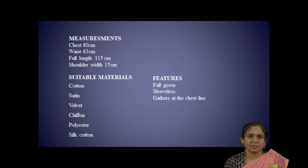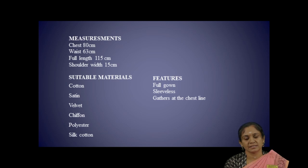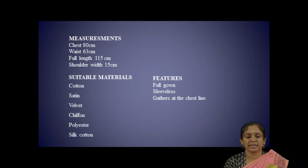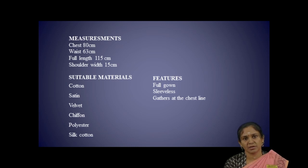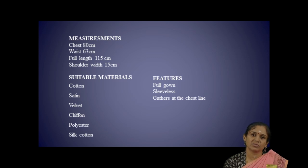The measurements needed for the Naiti are: chest circumference, that is 80 cm; waist circumference, that is 63 cm; full length 115 cm; and shoulder width is 15 cm. The suitable materials needed for the Naiti are cotton, satin, velvet, chiffon, polyester, and silk cotton. These fabrics are suitable for making Naiti.